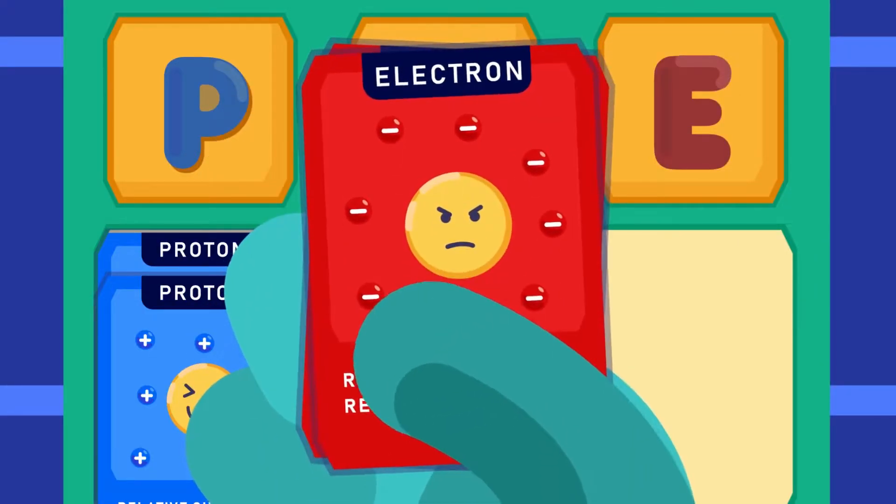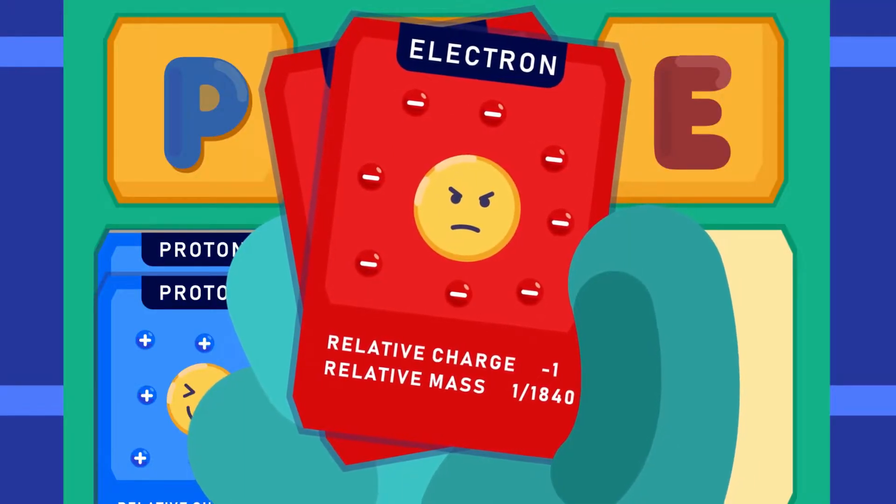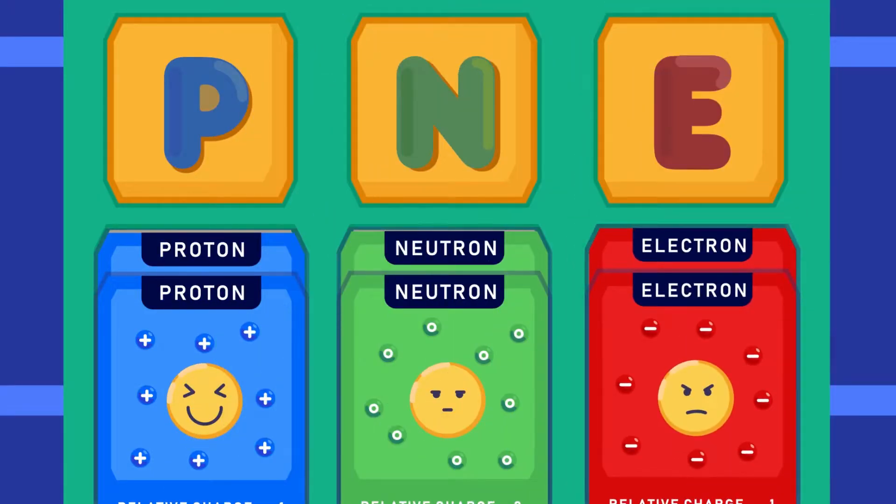An electron has a relative charge of minus 1 and a relative mass of 1 per 1840. It is represented by the symbol E. Protons are represented by the symbol P, while neutrons by the symbol N.